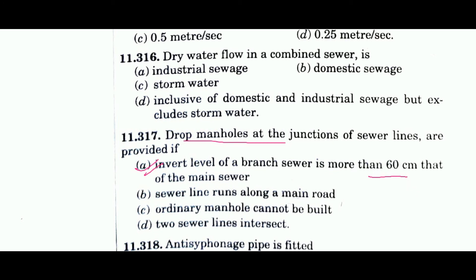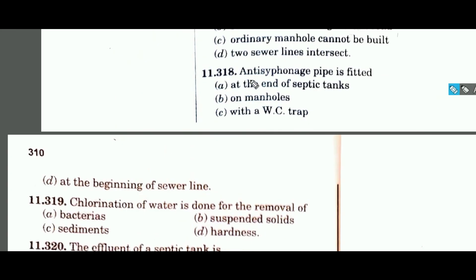Question 318 asks where an anti-siphonage pipe is fitted. It is fitted with the WC trap, so the answer is option C. In a multi-story building, when water is flushed from upper floors, the fast-flowing water creates a vacuum in lateral pipes, breaking the water seal of the WC trap. The anti-siphonage pipe is provided to prevent this.